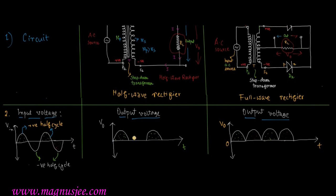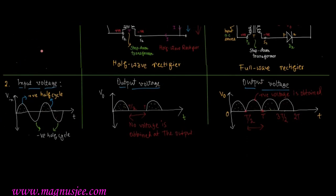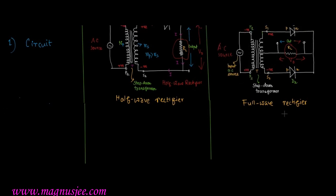In the output waveform of the half wave rectifier, the negative half cycle is removed — no voltage is obtained across load resistance RL during the negative half cycle, that is from T/2 to T. For the full wave rectifier, during the negative half cycle (T/2 to T), we get a positive output voltage instead of a negative one.